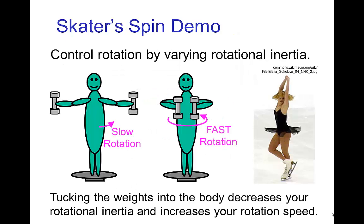There's a common physics demonstration where you stand on a platform holding some weights. When you bring the weights towards your body, you reduce the rotational inertia, and that increases the speed of rotation. Then you can pull the weights back out and that slows you back down. This is very much like when an ice skater does a spin, bringing her arms and legs close to her body.